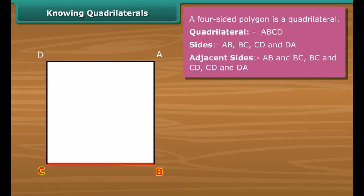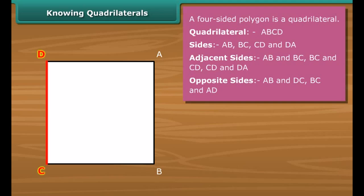Side AB and BC, BC and CD, CD and DA are adjacent sides. AB and DC, BC and AD are opposite sides.